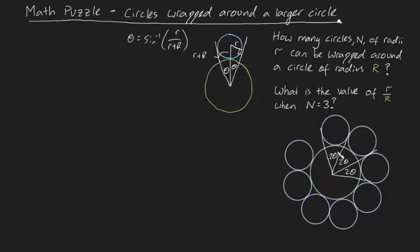So in fact you can say that 2θ times the amount of blue circles N must be equal to the total amount of radians in this green circle. Or another way of writing that is saying that N must be equal to 2π divided by 2θ.